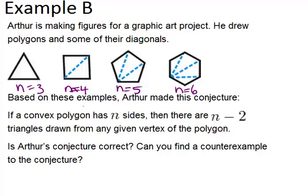So for example, if n is five, five minus two is three. He's saying in this example there are three triangles: one, two, three. In the next one there are four triangles: one, two, three, four. Which is six minus two.